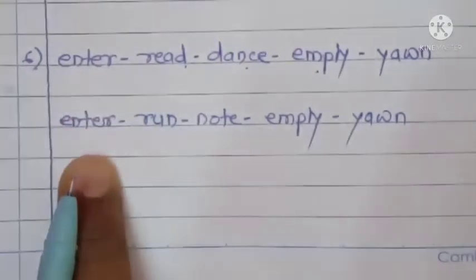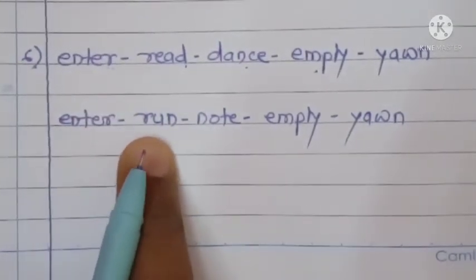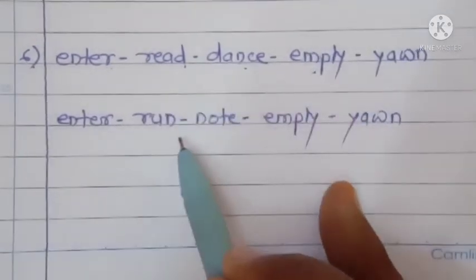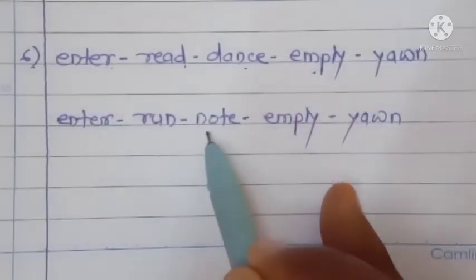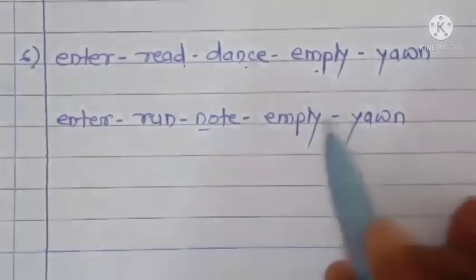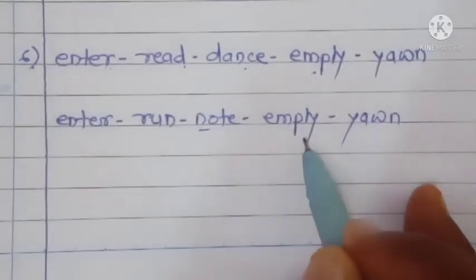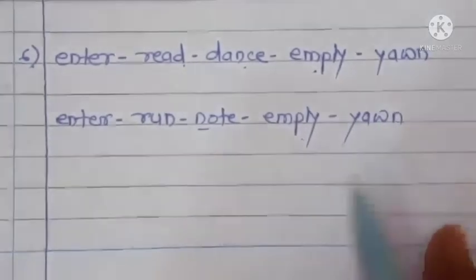Starting again with 'enter' — the next verb begins with 'r' — run. Then beginning with 'n' — note (meaning to note something). Then back to 'e' — empty. Then 'y' — yawn. So the word chain goes: enter, run, note, empty, yawn — each verb beginning with the last letter of the previous word.